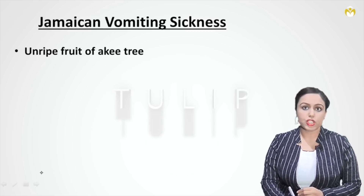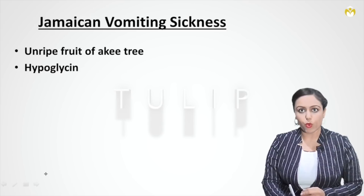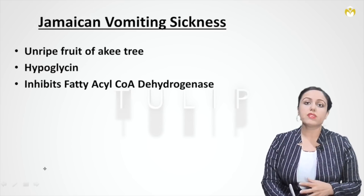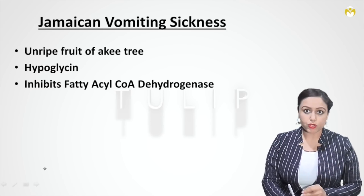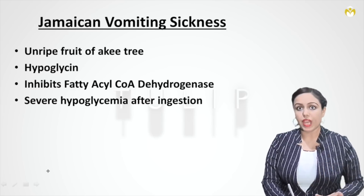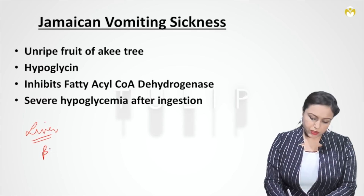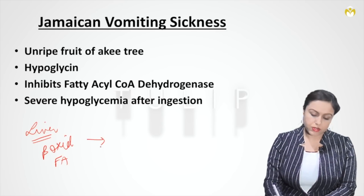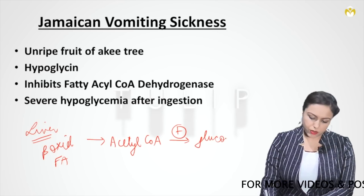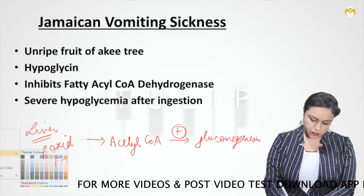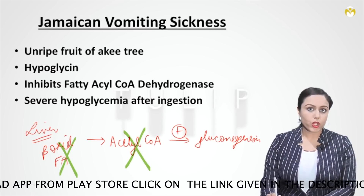Jamaican vomiting sickness occurs after ingestion of unripe fruit of the ackee tree because it contains a toxin called hypoglycin. Hypoglycin inhibits the fatty acyl-CoA dehydrogenase enzyme, which is one of the enzymes in beta oxidation of fatty acid. The patient will have severe hypoglycemia because in the liver, beta oxidation produces acetyl-CoA, which activates gluconeogenesis. If beta oxidation is not occurring, acetyl-CoA is not obtained and gluconeogenesis cannot be activated.